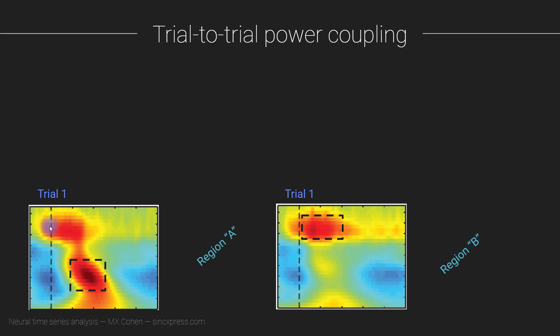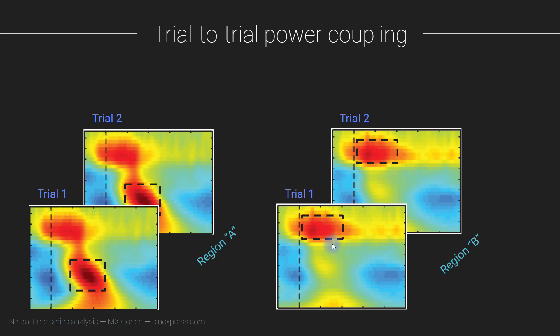So then you have the time-frequency power—so we're working with power, time-frequency power from trial one and trial one here, and then you have time-frequency power from trial two. Now of course this is like exactly the same picture here, but you know, imagine this would be the actual time-frequency map from trial two from this electrode, and this is also the time-frequency map from trial two from this other electrode.